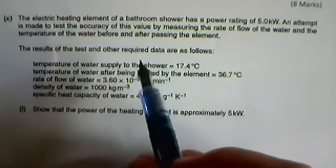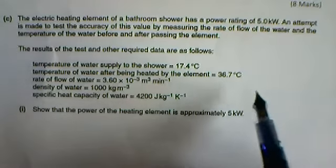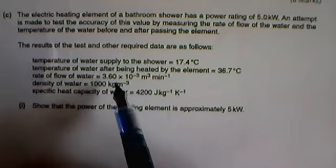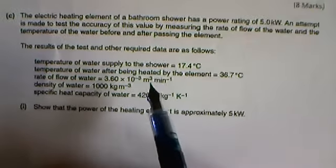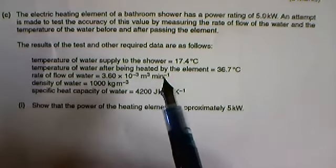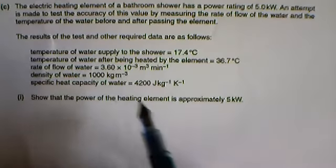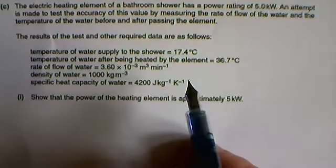All we know about the water is that it starts at 17.4 degrees and finishes at 36.7 degrees. We know how much water in terms of cubic meters per minute is flowing down the pipe. We know the density of water and the specific heat capacity of water, and it's asking us to check whether the heating element is five kilowatts.